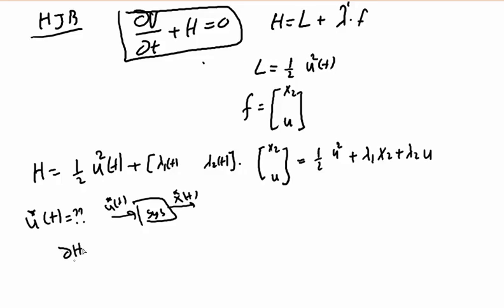To find this, we need to take ∂H/∂u and equate it to 0, then find u*(t). We need to differentiate this equation with respect to u and equate it to 0.